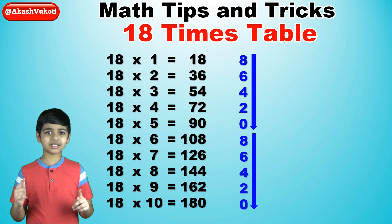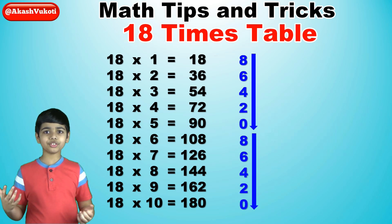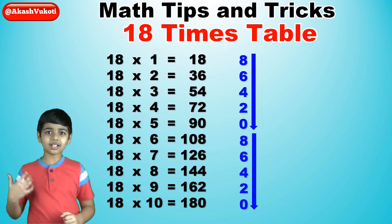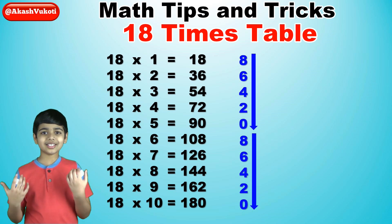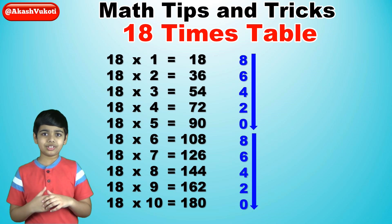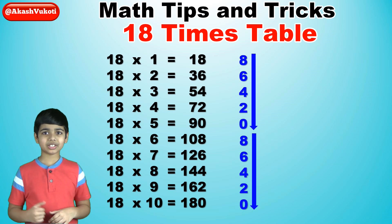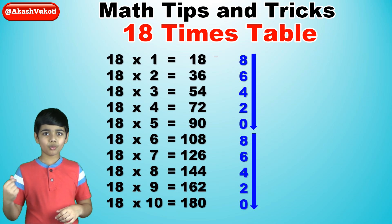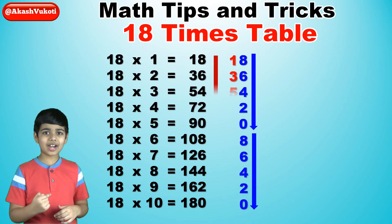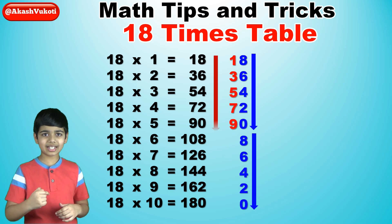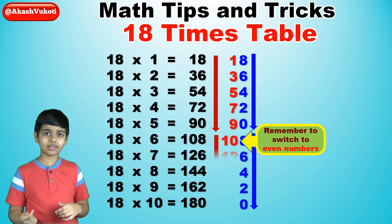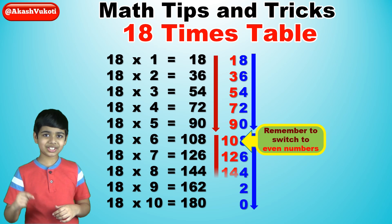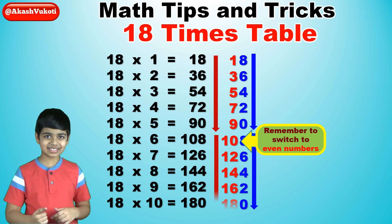Next, for the 10s digits, we'll just write the odd numbers from 1 to 9, and then the even numbers from 10 to 18. So: 1, 3, 5, 7, 9, and then 10, 12, 14, 16, 18.